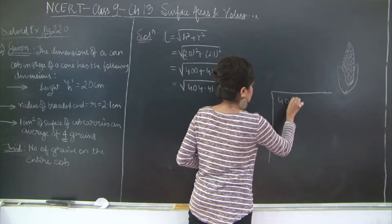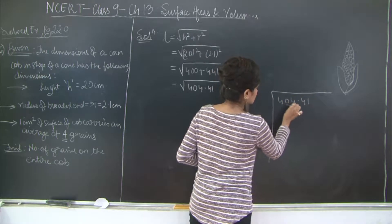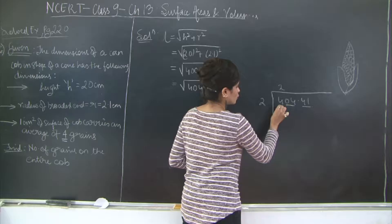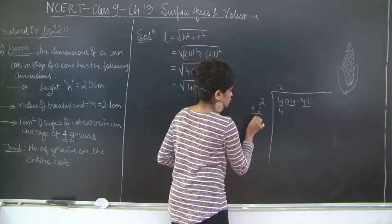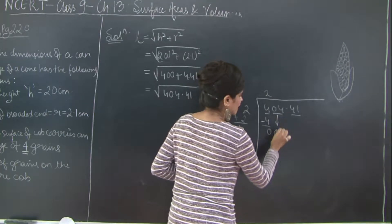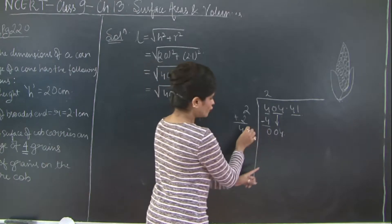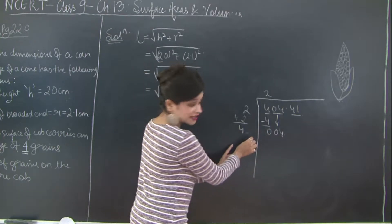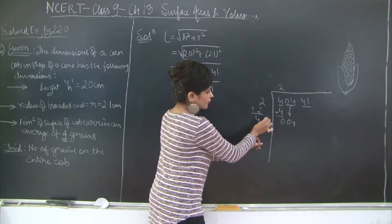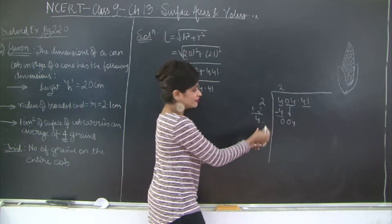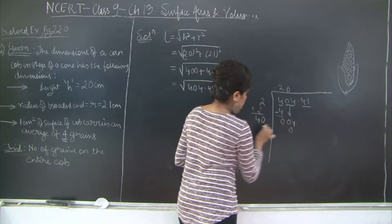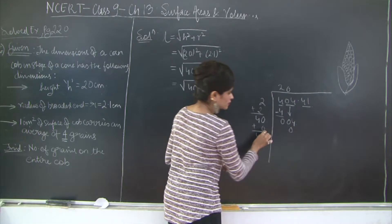So you have 404.41. 2 twos are 4. You add this 2 over here as well, so you get 4. And then you bring down this pair, 0 and 4. Now 4 into what would give you 4 and 1 number here multiplied with the same number should give you this number. But if I add any number out here, let's say even 40, 41 into 1 will give me 41, but that won't go in this number.